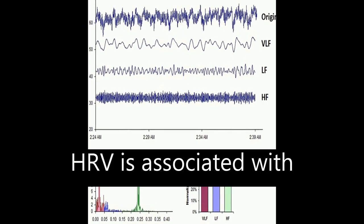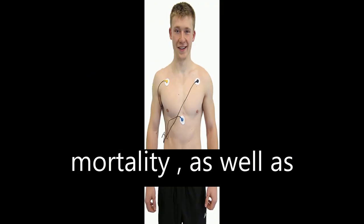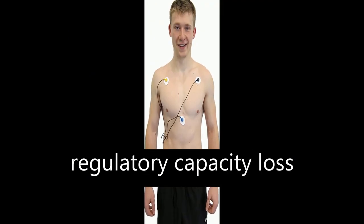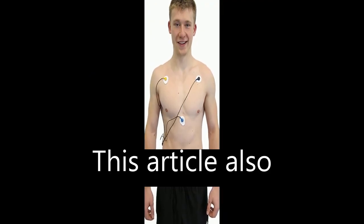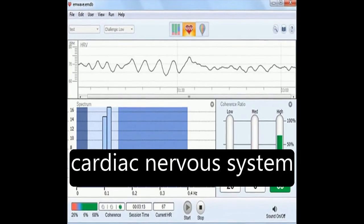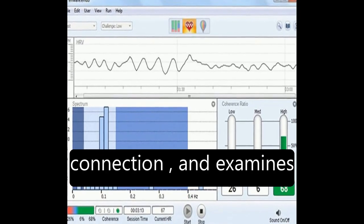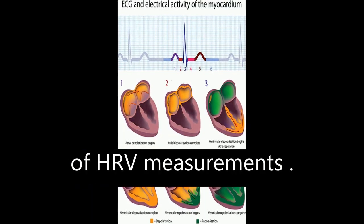HRV is associated with disease risk and mortality, as well as regulatory capacity loss. This article also discusses the intrinsic cardiac nervous system and heart-brain connection, and examines different frequency bands of HRV measurements.